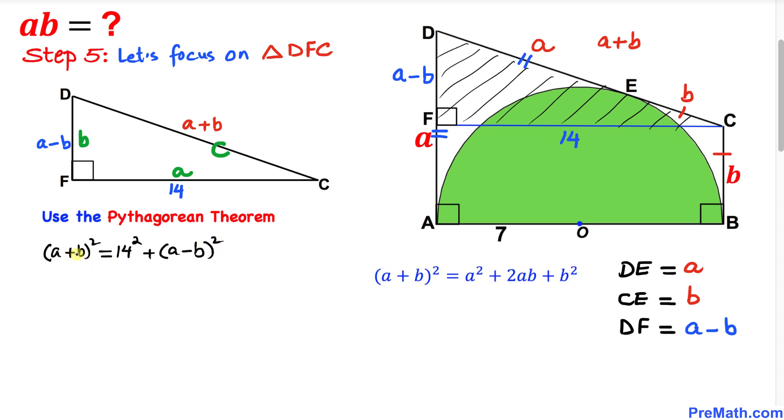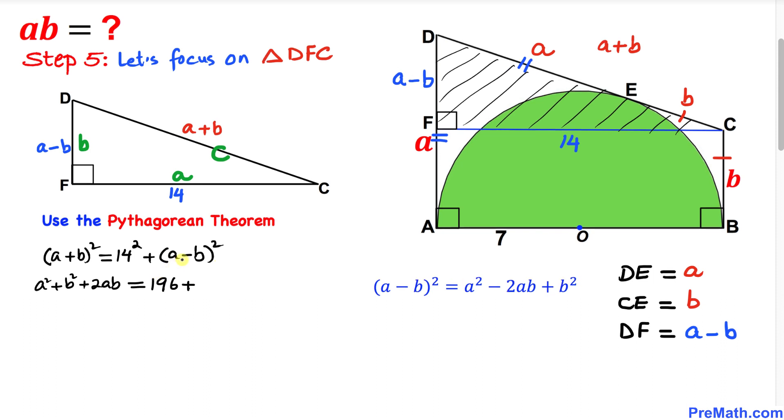Now let's expand these binomials. This can be written as a² + b² + 2ab = 196 + a² + b² - 2ab. We can see that a² + b² cancel out from both sides, so we end up with 2ab = 196 - 2ab.